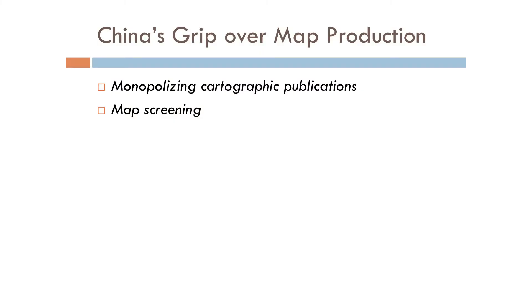This monopolization goes hand in hand with map screening. There are regulations from the SBSM regarding how maps should be drawn, and every time anyone wants to publish maps they have to go through this screening. For cartographers and geographers it is very important to present accurate and clear information on maps. But for Chinese maps, there are regulations trying to minimize the accuracy of information presented, because for the Chinese regime releasing geographic information is like releasing state secrets. So there are a lot of regulations to ensure that maps cannot be as precise as we expect in places like America.